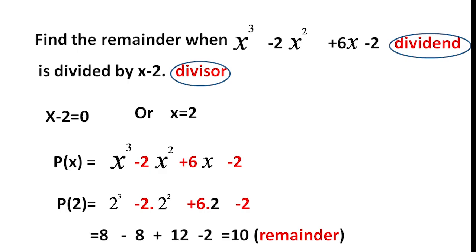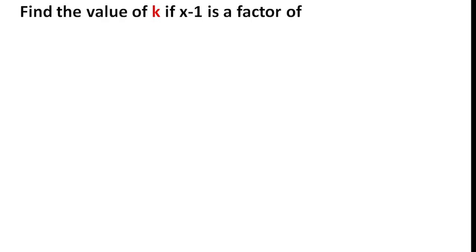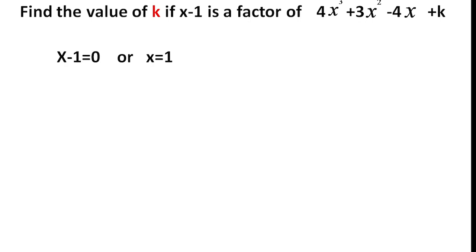We will do one more question related to the remainder theorem. Find the value of k if x minus 1 is a factor of 4x cubed plus 3x squared minus 4x plus k. Here, x minus 1 is given as a factor. It is a linear polynomial, so we can find its zero: x minus 1 equals 0, which means x equals 1.